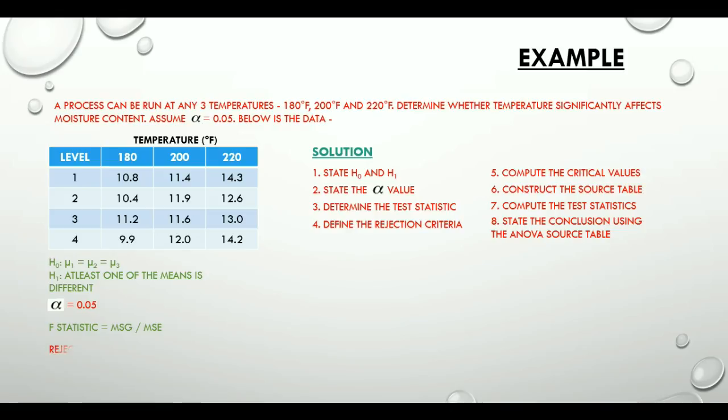Rejection criteria would be reject H0 if test statistics is greater than critical value. We get critical values from an F distribution table using the alpha and the degrees of freedom for between and within groups variation.